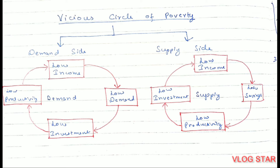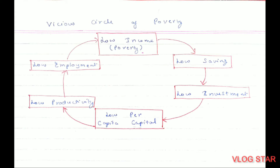On the supply side, in underdeveloped countries people have low income, which leads to less savings. Less savings leads to a low rate of investment — neither in physical capital nor in human capital. Low investment leads to less production and low productivity, which again leads to low income. To increase the supply side, Nurkse said we must invest in different sectors: agricultural sector, industrial sectors, social overhead capital, foreign trade, and internal trade.